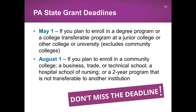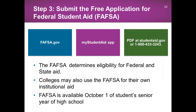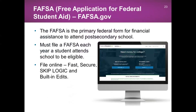Now let's talk about the free application for federal student aid. This application determines federal and state aid eligibility and is required by most schools. The application will be available on October 1. You can complete it online, download the My Student Aid app and complete it on your mobile device, or obtain a PDF by calling the studentaid.gov help line. The FAFSA must be completed each year. The online application is fast and secure, has a lot of skip logic built in, and will not allow you to proceed if there is an error on a page.